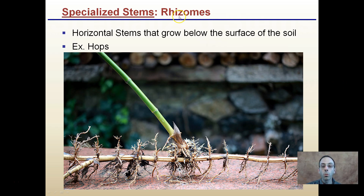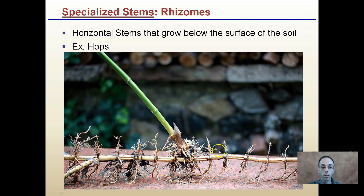There's something called rhizomes. These are horizontal stems that grow below the surface of the soil. We see that here where roots are coming off them, and this structure right here is called a rhizome. These are horizontal stems and they're growing below the soil surface.